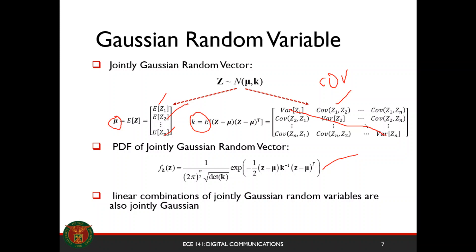If we combine or add all these Gaussian random variables — just add or subtract them — you still get a Gaussian random variable.